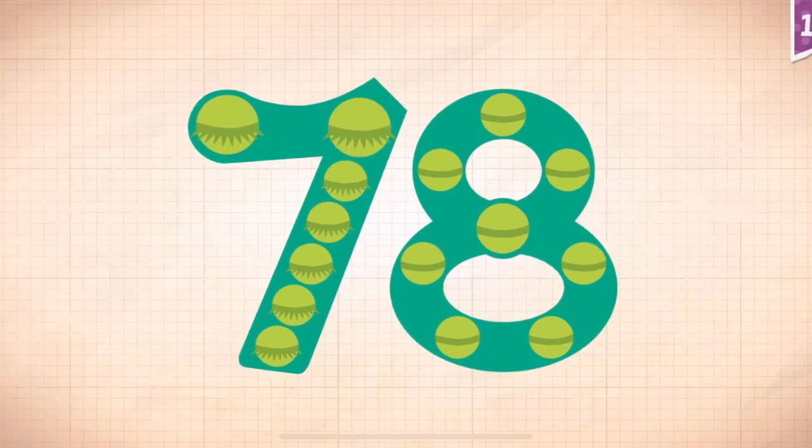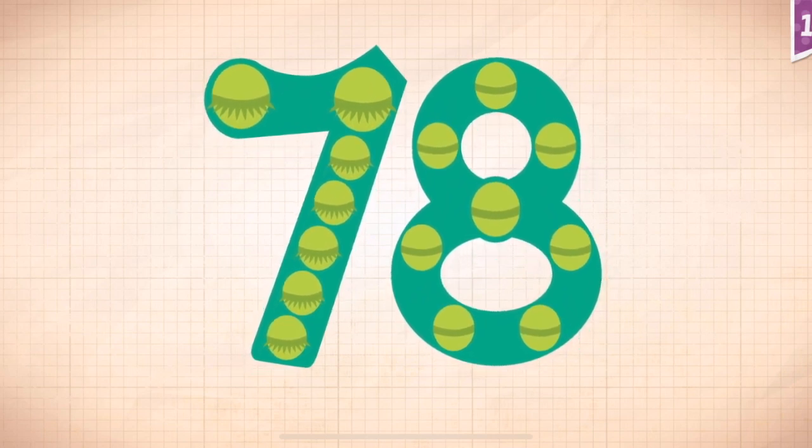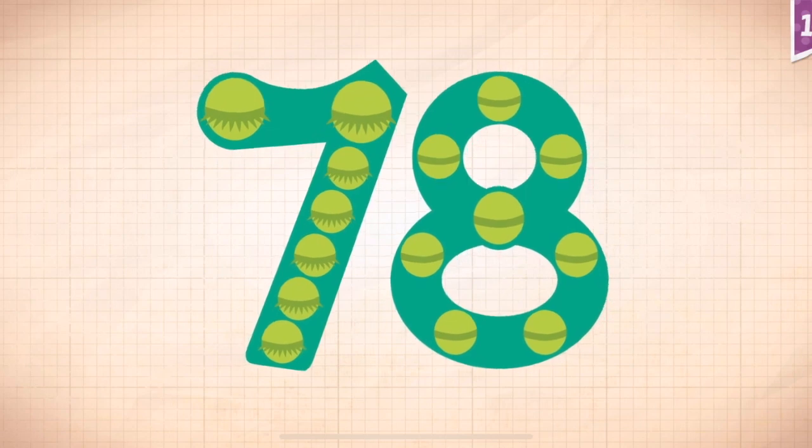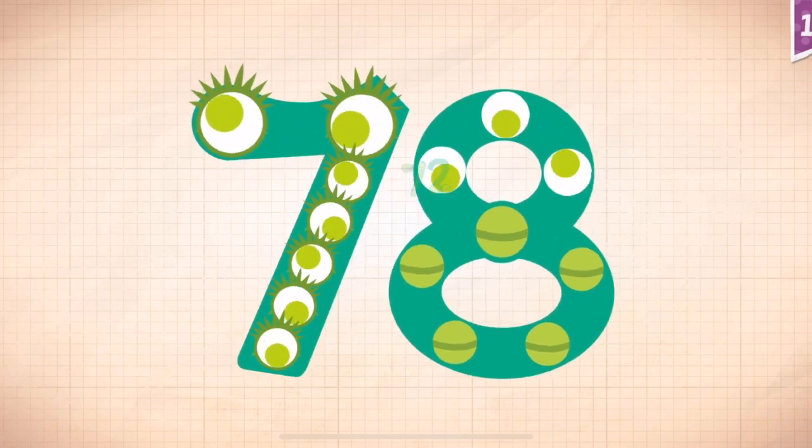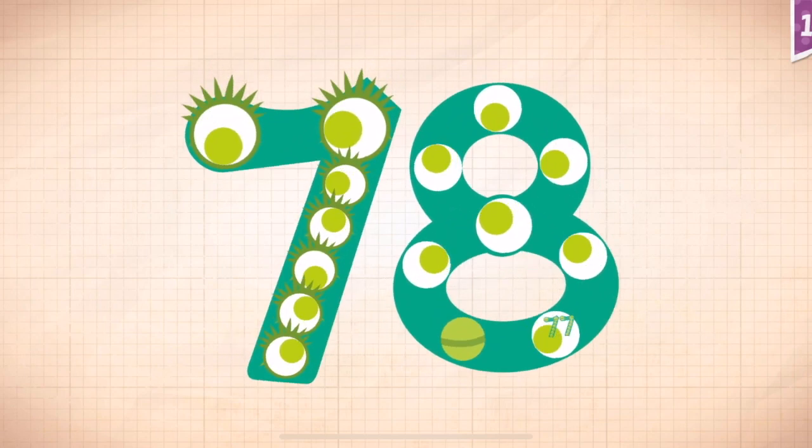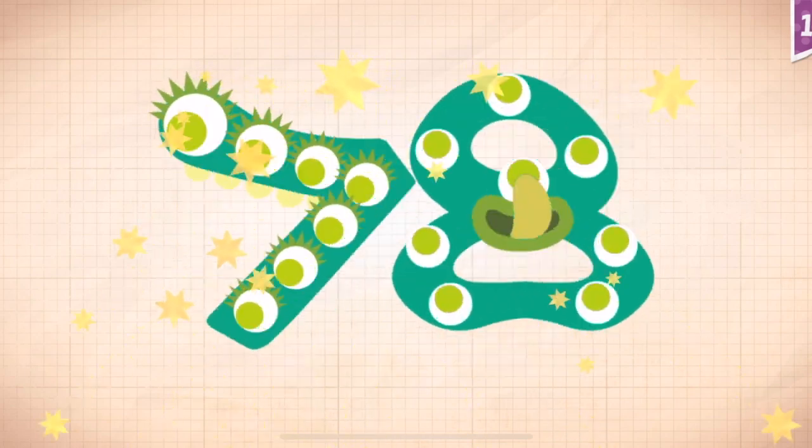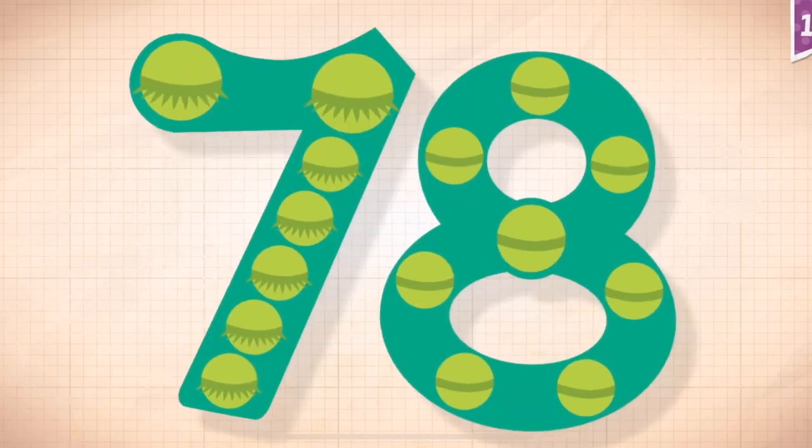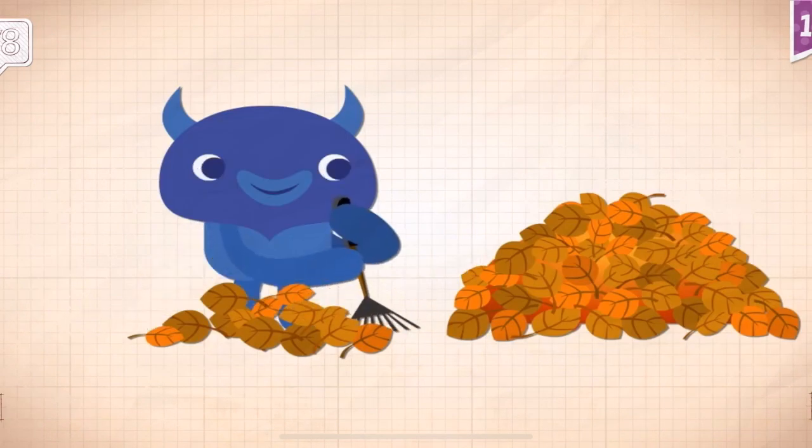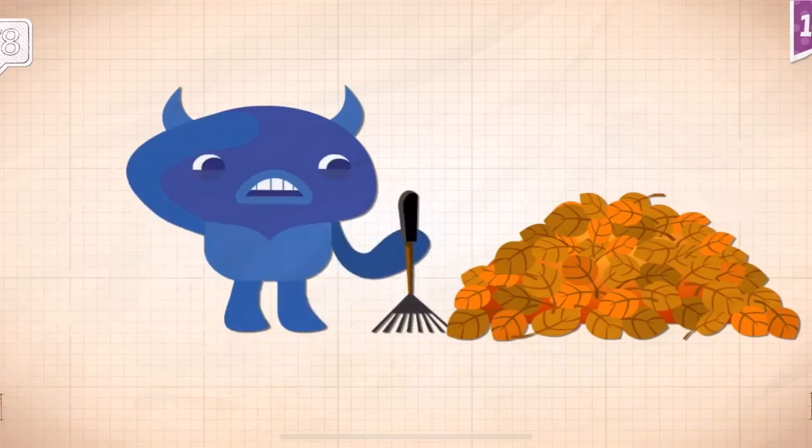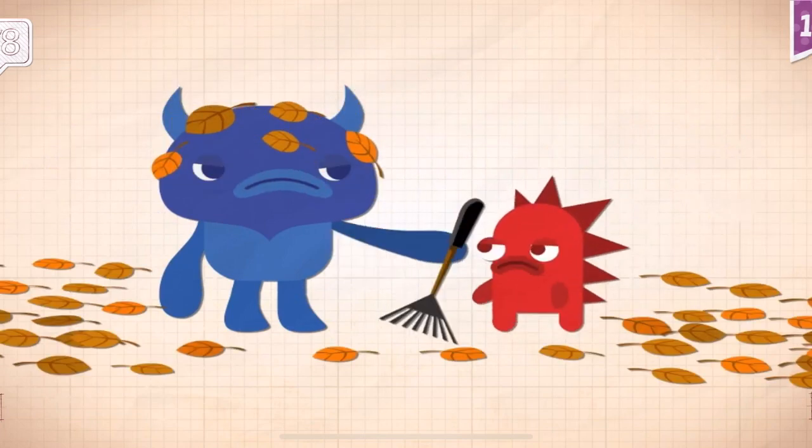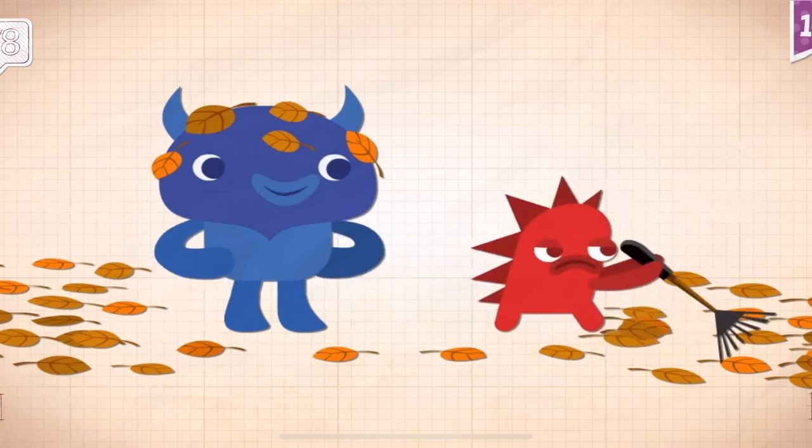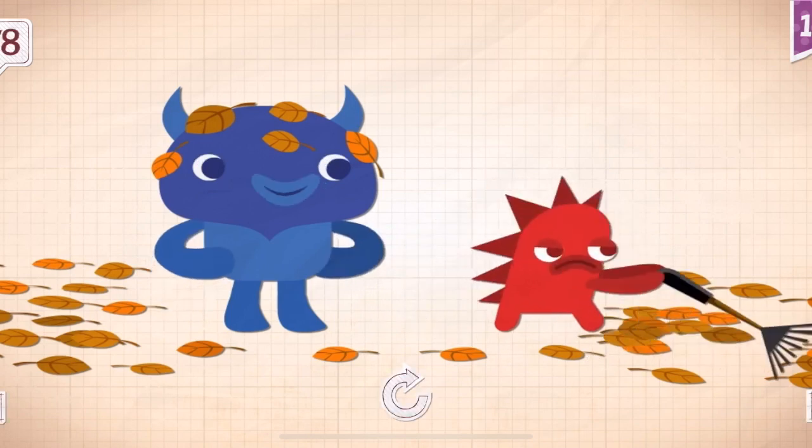39 plus 39 equals 78. Touch the monster's eyes to wake it up. 10, 20, 30, 40, 50, 60, 70, 71, 72, 73, 75, 76, 77. It was Rocky's turn to rake the 78 leaves back into a pile.